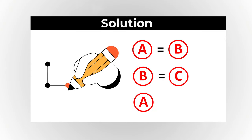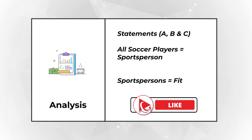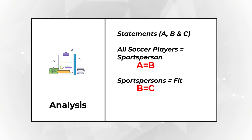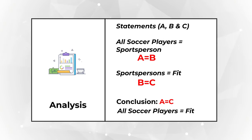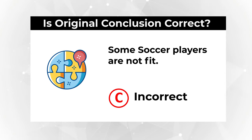In logical reasoning, if A equals B and B equals C, then A equals C. 'All soccer players are sports persons' is A = B, and 'all sports persons are fit' is B = C. Therefore A = C: all soccer players are fit. The conclusion that 'some soccer players are not fit' is therefore incorrect. The correct choice is C, incorrect.